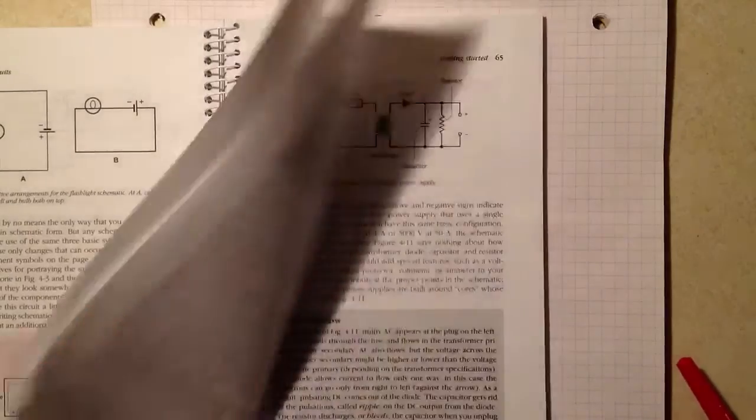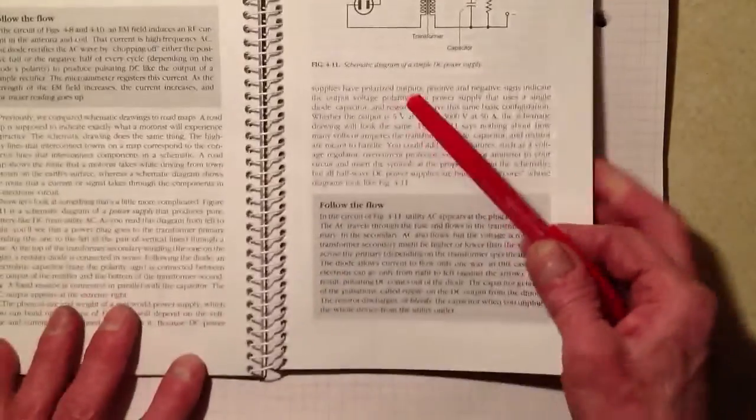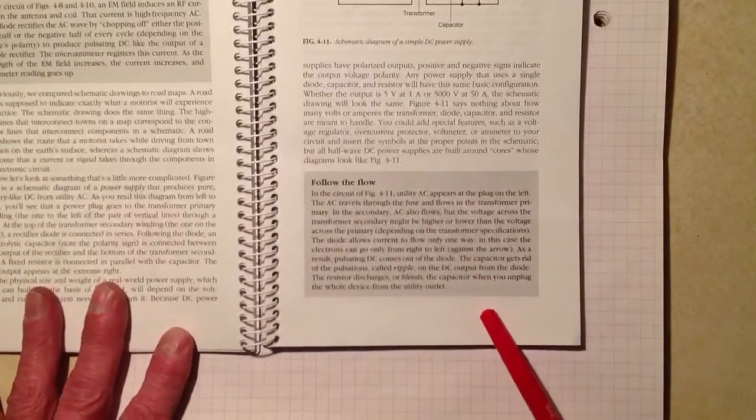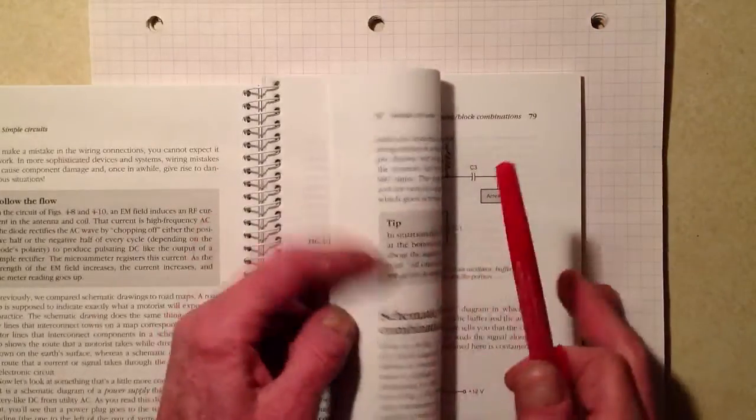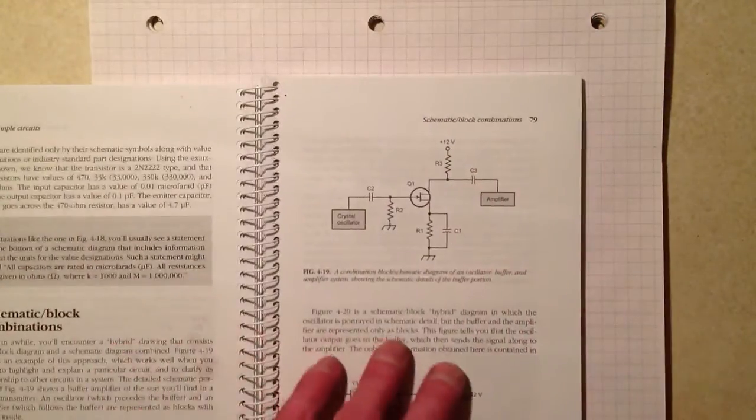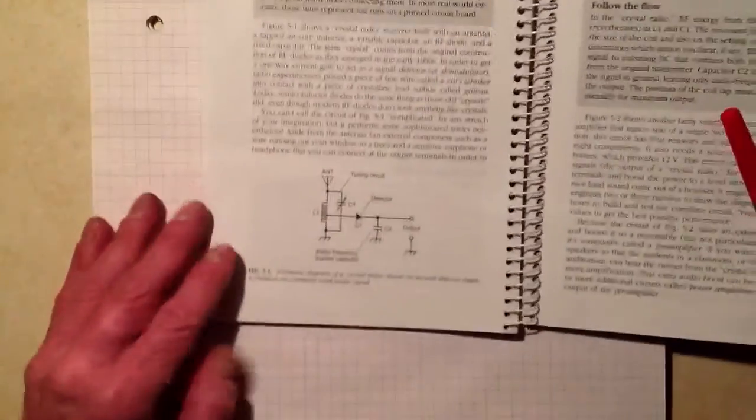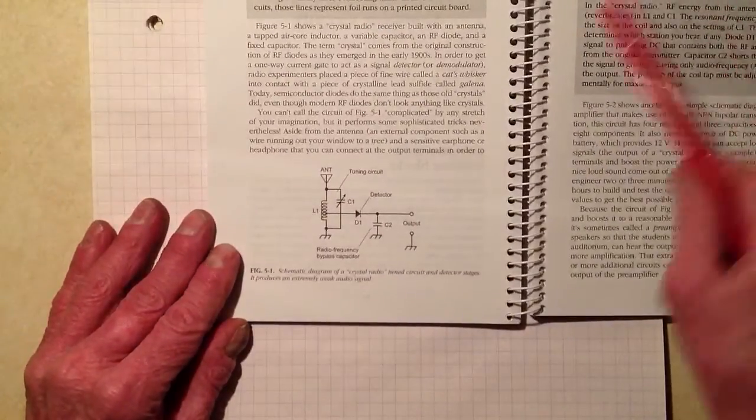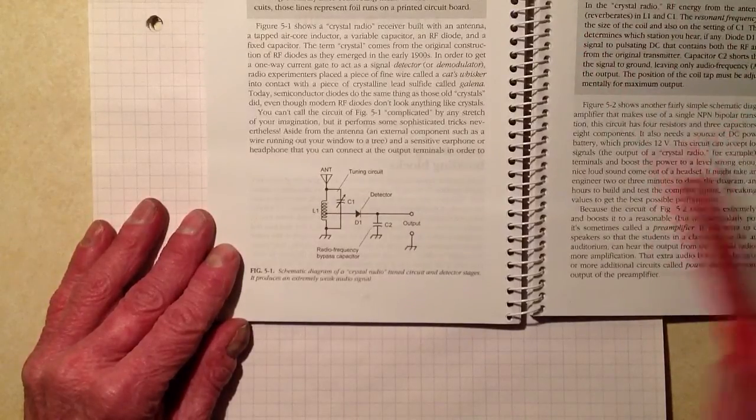Other improvements include little blurbs called follow the flow. What they tell you is how the currents and signals flow through various circuits shown in the book in the diagrams. Well, I've done that. I've gone through a variety of these circuits already and expounded on the follow the flow blurbs in the book where they exist.